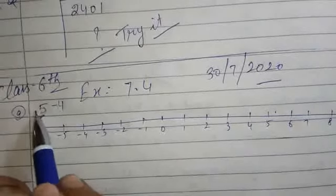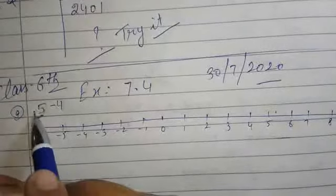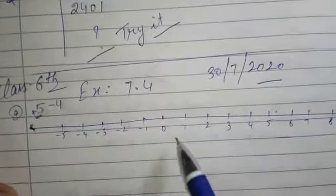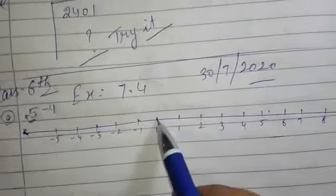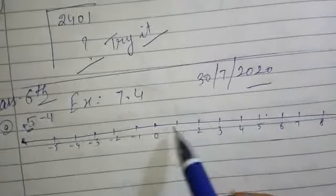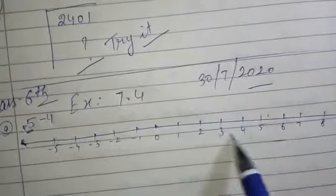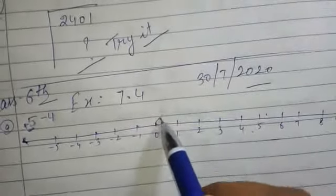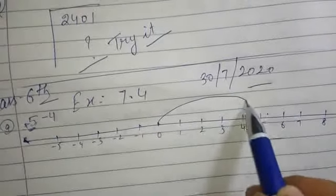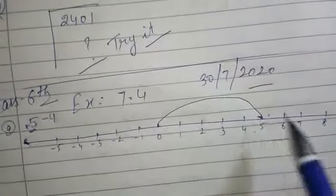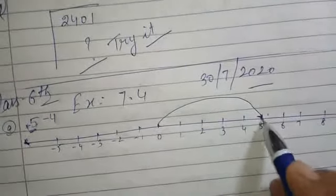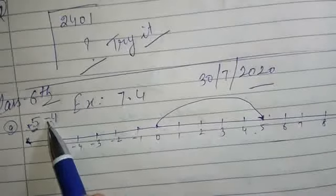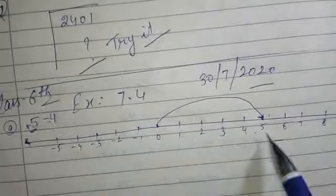5 के साथ आगे कोई symbol नहीं है, it means यह plus में है. तो हम 0 से positive side की तरफ जाएंगे — जिन numbers के साथ कोई sign नहीं लगा हुआ है, उन numbers की साइड जाएंगे. After that, 4 minus किया हुआ है.